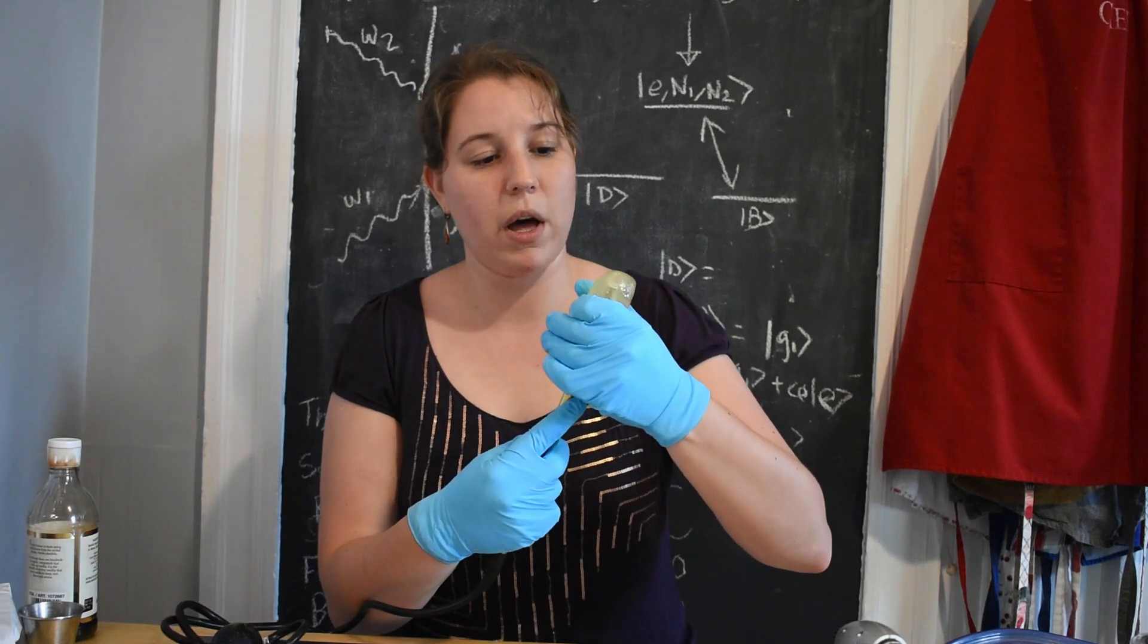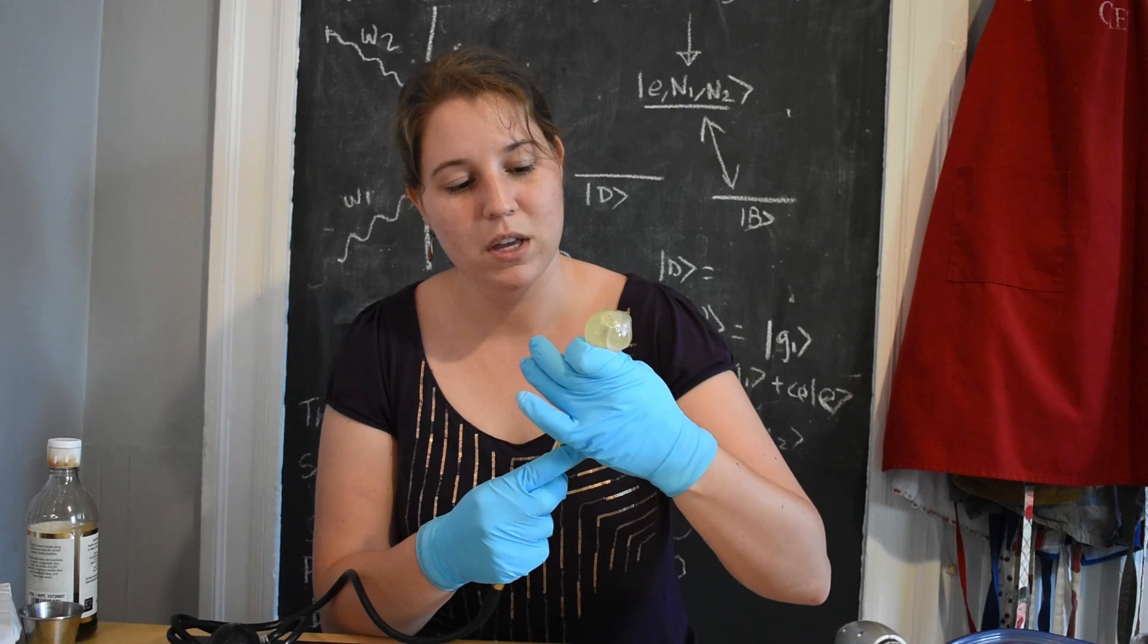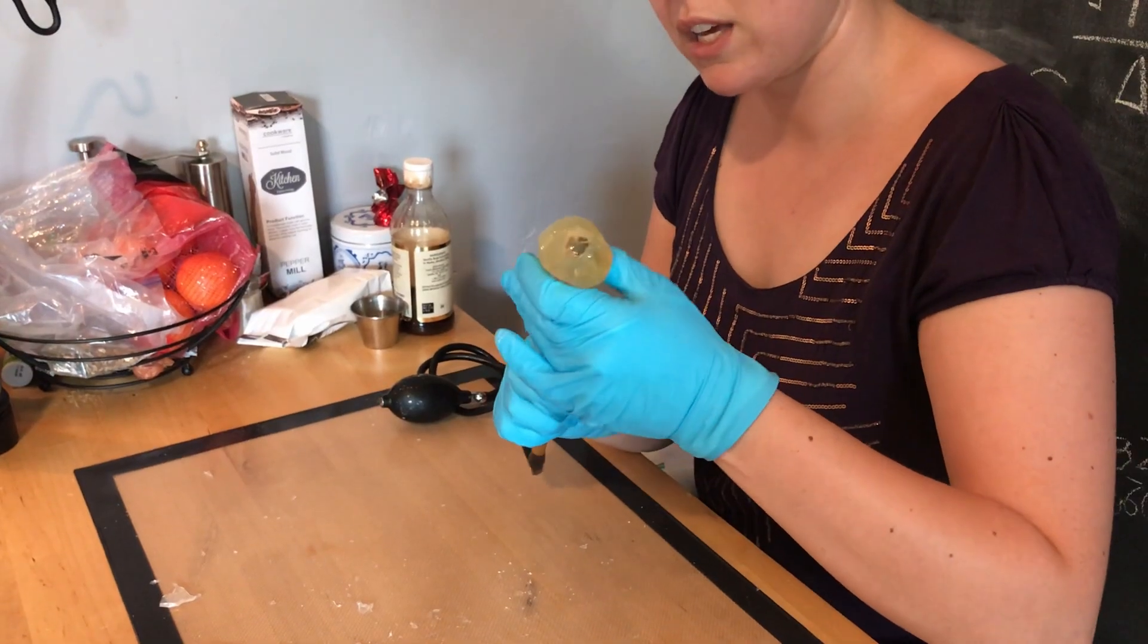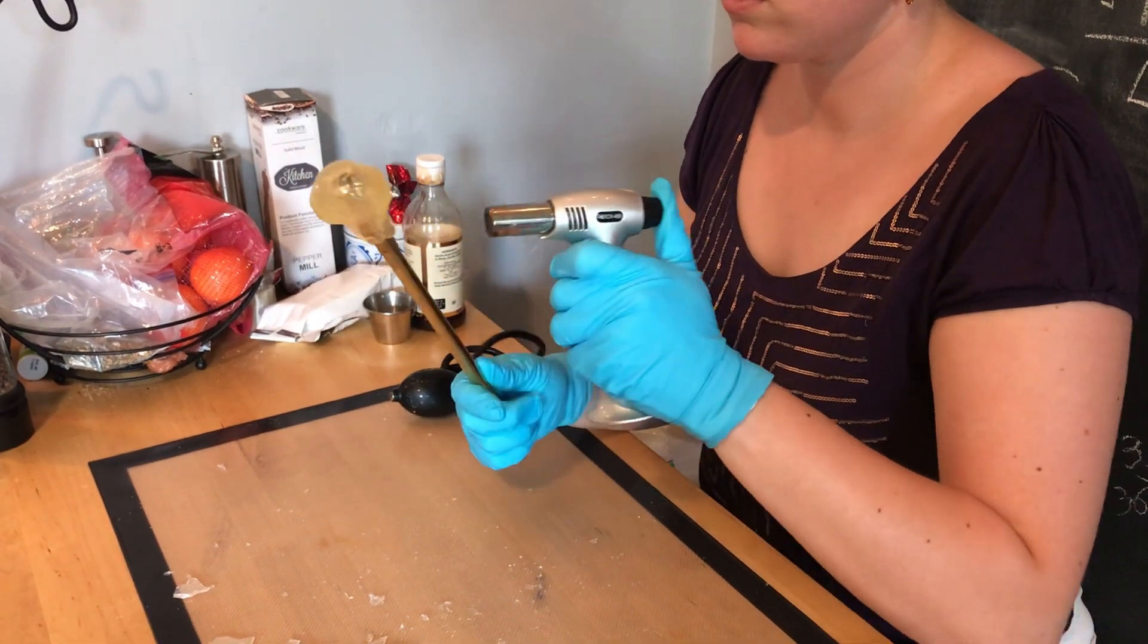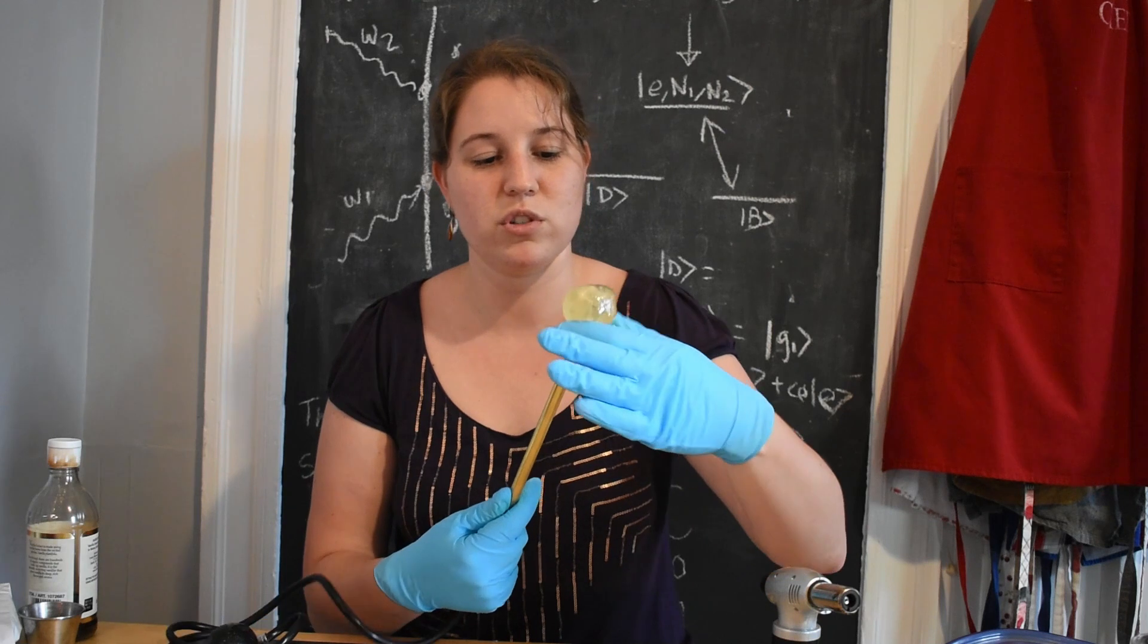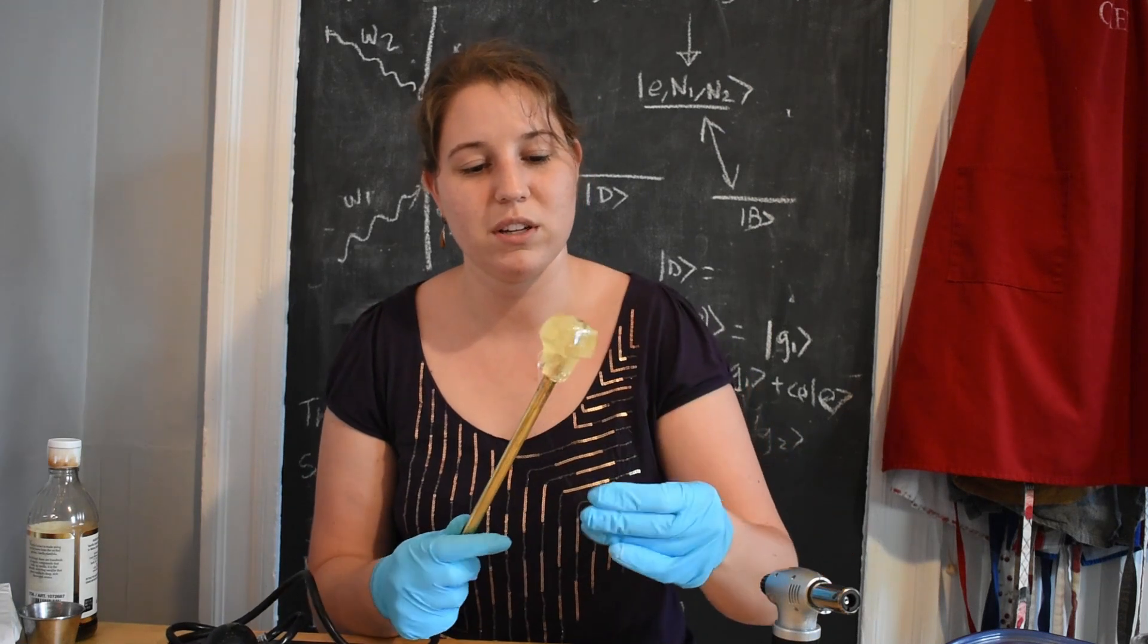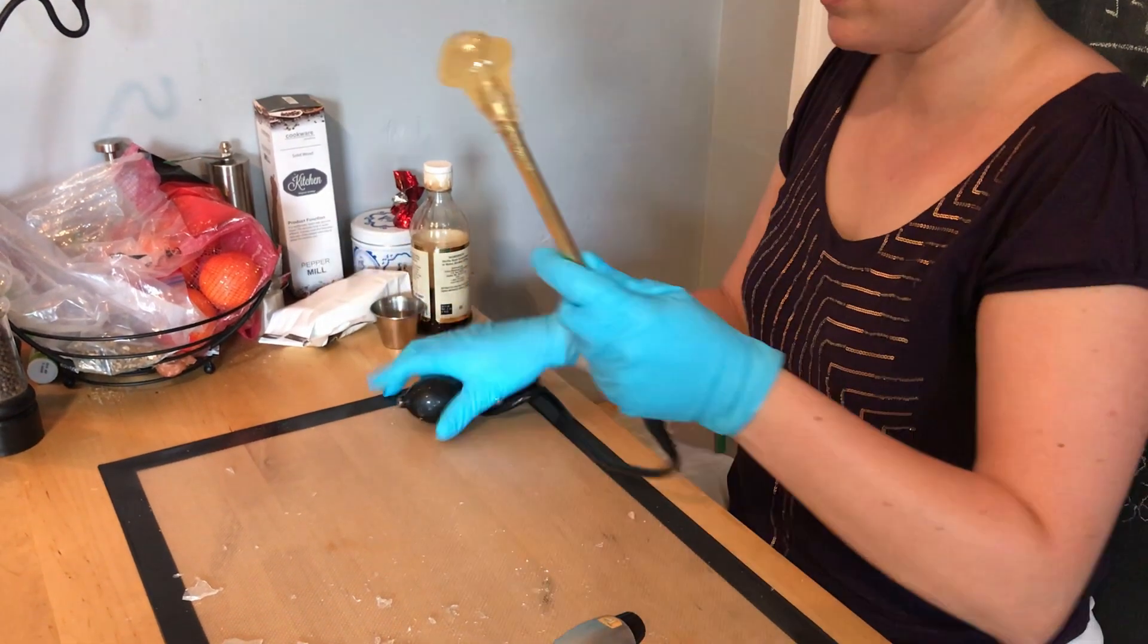And then in order to seal the bottom so that once I start blowing air in, none of the air escapes out of the bottom, I'm first going to squeeze it on as tight as I can. And then I'm going to melt the bottom just a little so that I am able to just squish that on a bit more thoroughly. All right, let's try this.